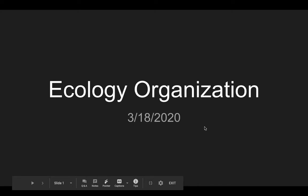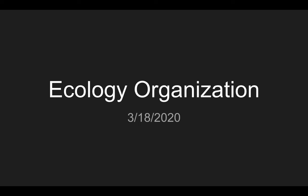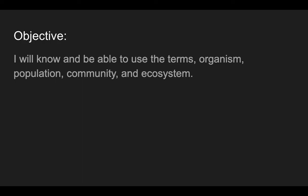Good morning, sixth grade students. We're going to go ahead and start with our ecology organization. Today, our goal is really simple. You need to be able to use and know the terms organism, population, community, and ecosystem. So by the end of the lesson, let's make sure we can do that. And then you will be showing that you know that by completing a writing assignment in Canvas.